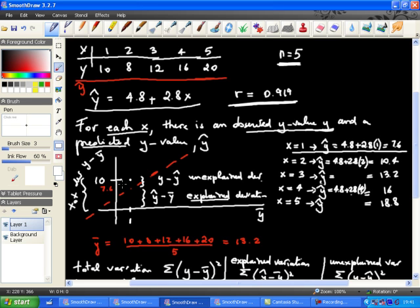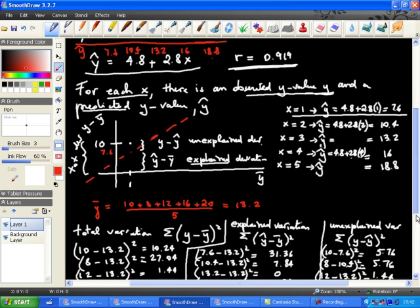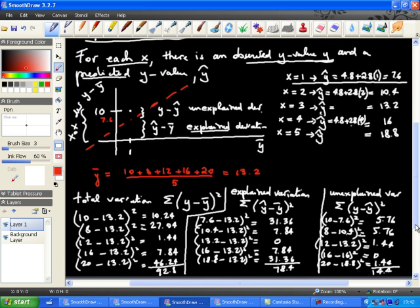And so now in here, I calculated all the predicted y-value by simply substituting into the equation values of x. And so I can reproduce them in here. I'll do that in red. They are 7.6. So I reproduced all my y-hat values. And then I calculated y-bar, which is simply the sum of the y-values, 10 plus 8 plus 12 plus 16 plus 20 divided by 5. That gives us 13.2.